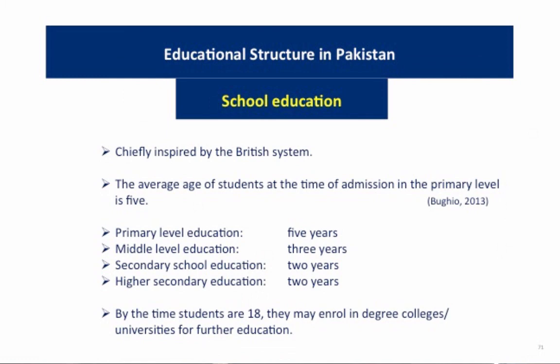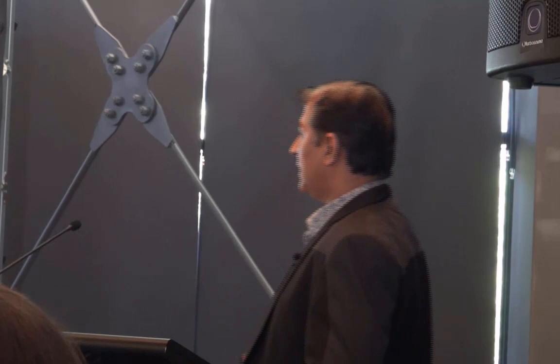To give you a little background of the education structure back in Pakistan, our education system is mainly inspired by the British education system. The average age of students entering primary school is five years. They then study five years of primary education, three years of middle education, two years of secondary education, and two years of higher education. After these twelve years, students are eligible to enroll in university or college.